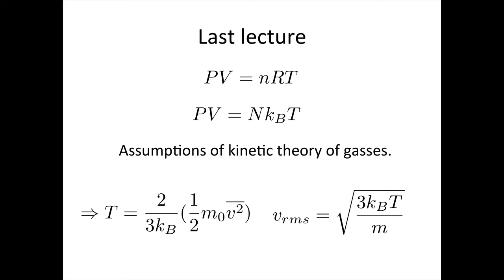If you've just got one or two molecules, then it may be easier to use the second form of the ideal gas law: PV equals NkBT, where capital N here is the number of molecules and kB is Boltzmann's constant.